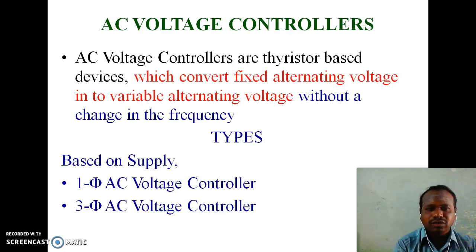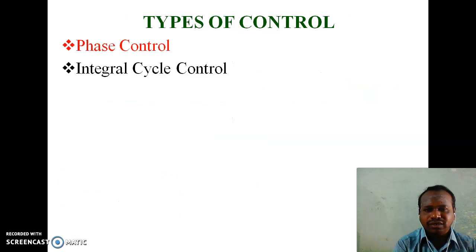AC voltage controllers are thyristor-based devices which convert fixed alternating voltage into variable alternating voltage without a change in frequency. Types of AC voltage controllers: based on supply, single-phase AC voltage controller and three-phase AC voltage controller. Types of control: phase control and integral cycle control.